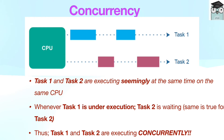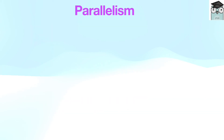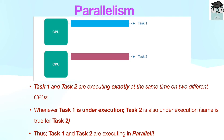Go runtime inherently supports concurrent execution of goroutines. Two or more processes are said to be parallel if they are executing exactly at the same time. Parallel processes do not share the same CPU — while one process is executing on one CPU, other parallel processes keep executing on other CPUs simultaneously.